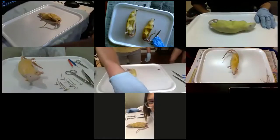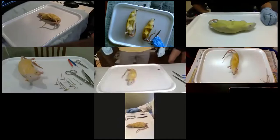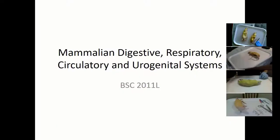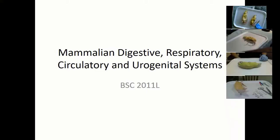I just want to go over the organ systems that we're going to be seeing first. We're going to use the rat as a model, as an example of a mammal. The reason why we use rats is that, first, it's a mammal. So the organ systems and the organs are actually very similar to ours, taking into consideration the size difference. The organization, the shape, the location of the organ systems are all very similar to ours. There are very few differences.